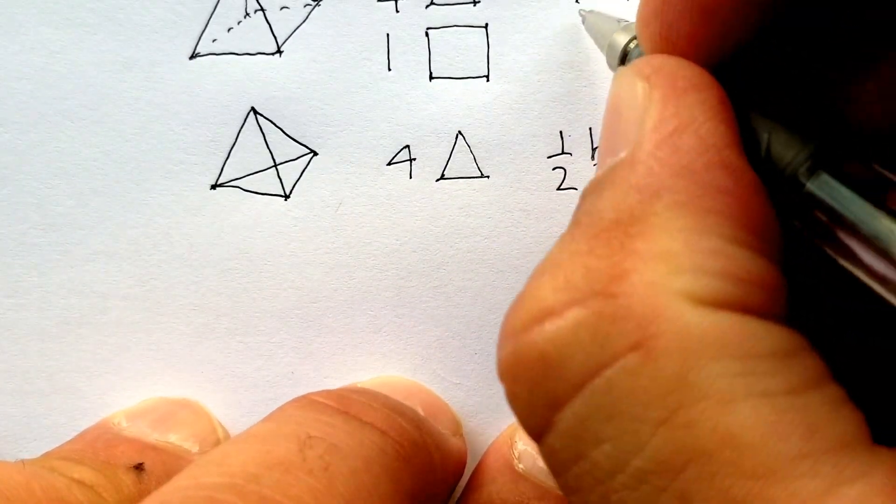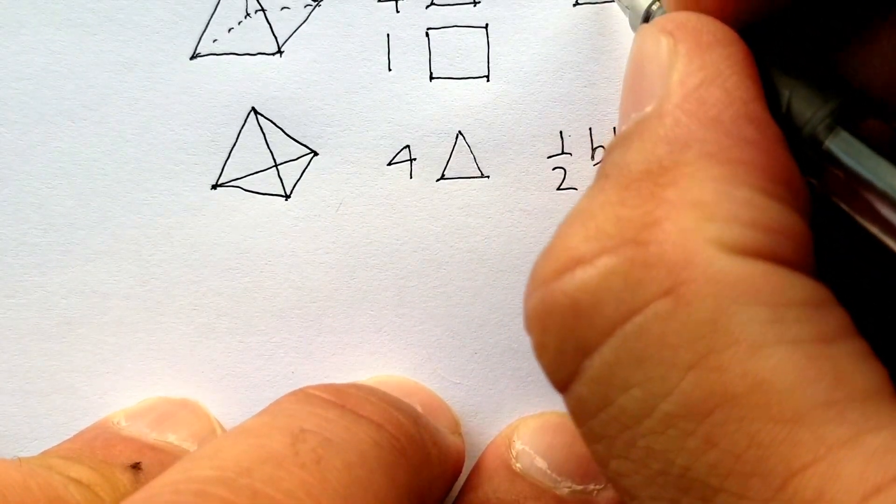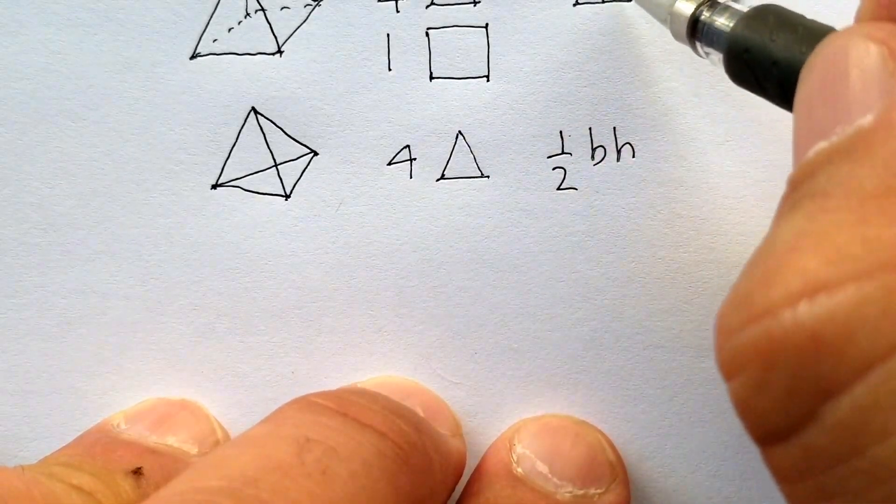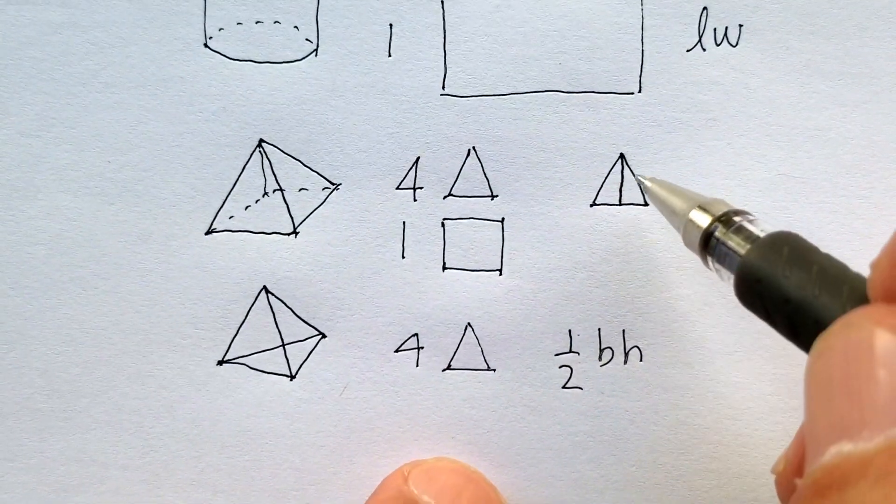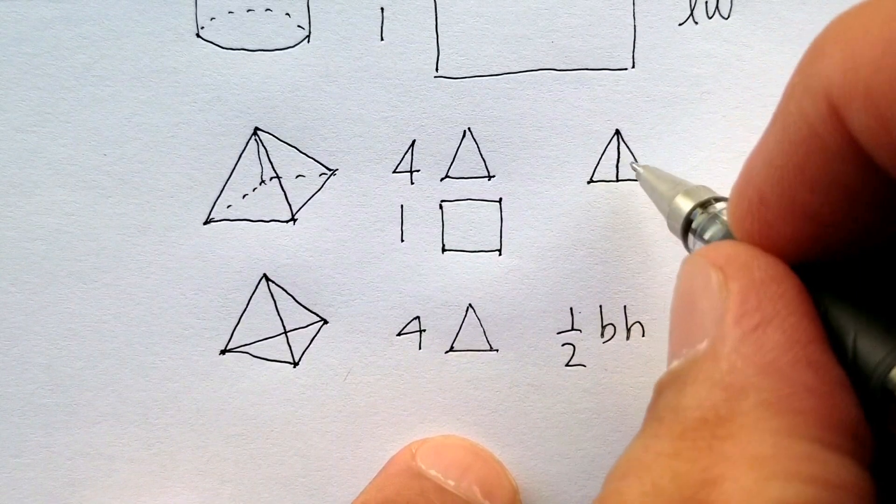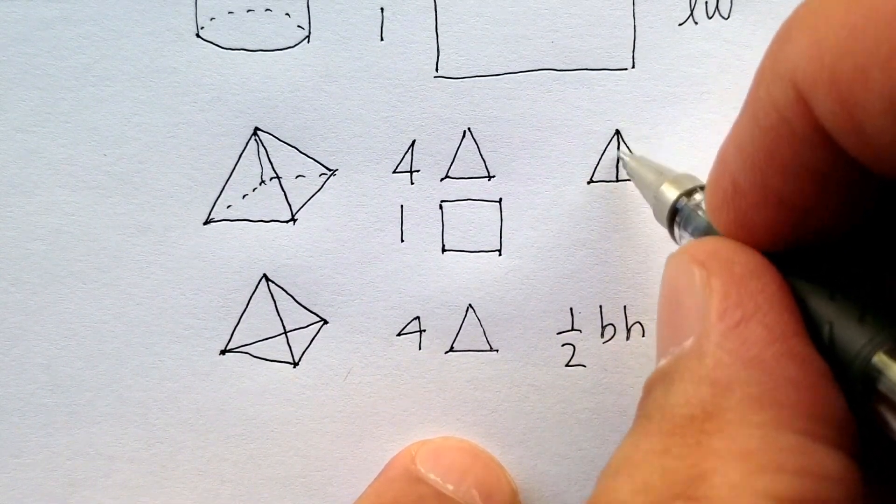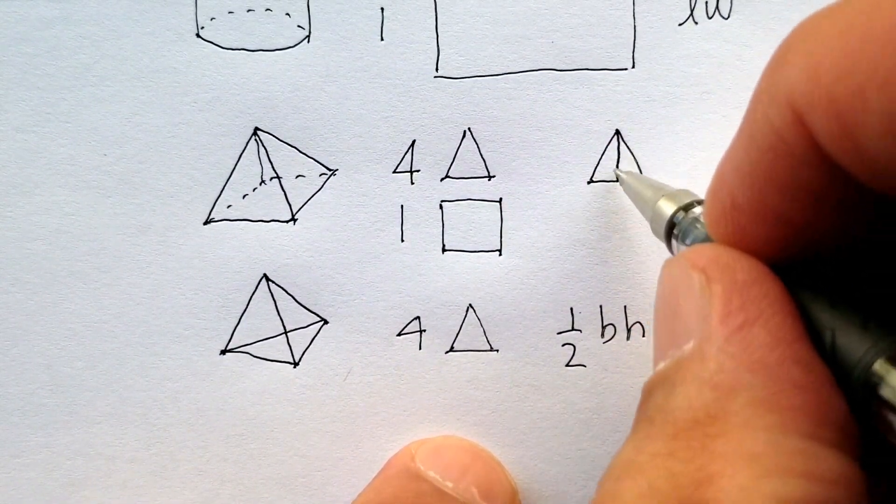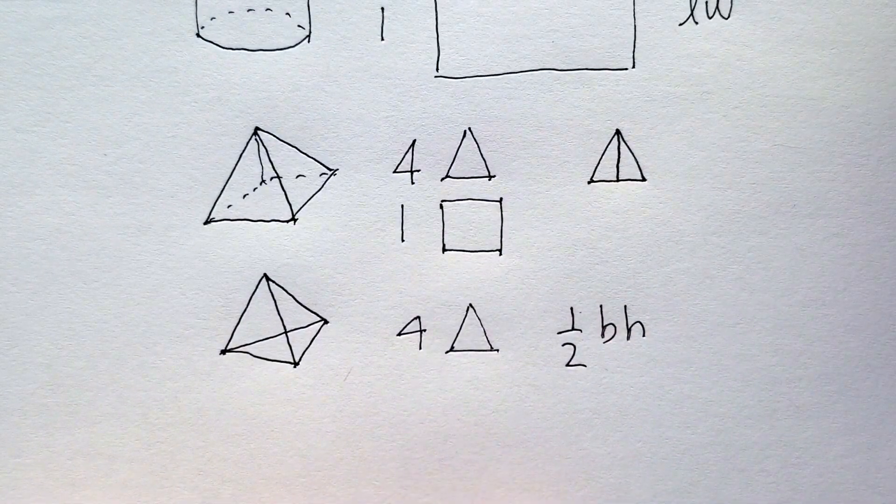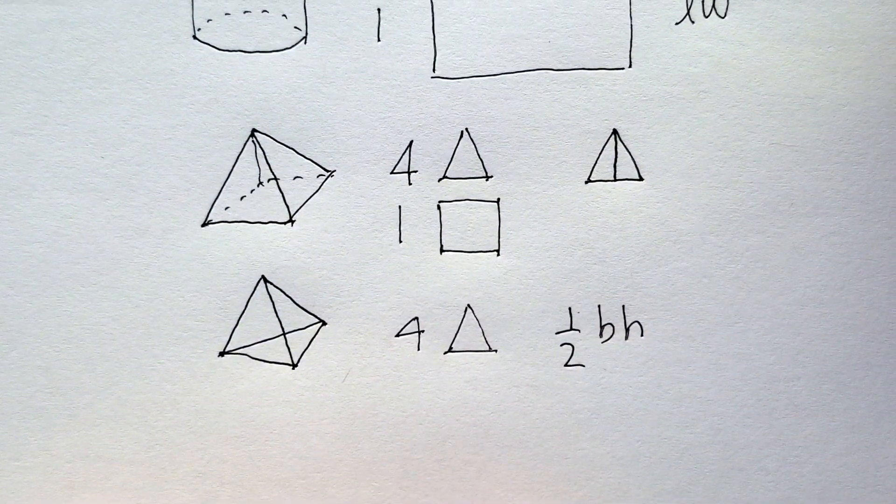And for an equilateral triangle, where all three sides are the same, you basically cut that up. Find these two—just find the area of one-half base times the height, and then multiply it by two because you have two of them for an equilateral triangle.